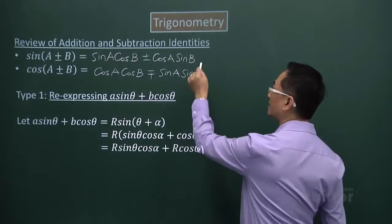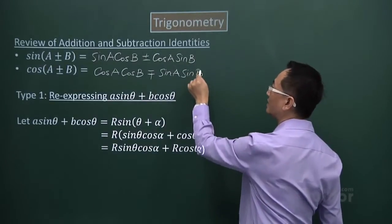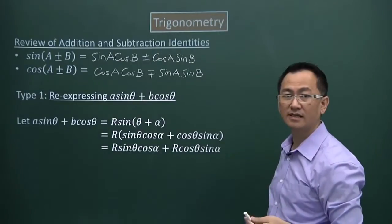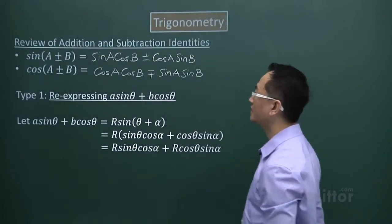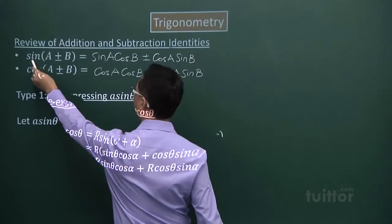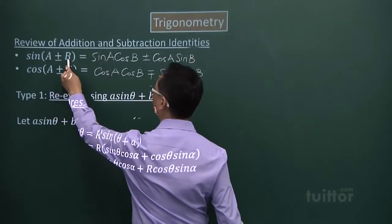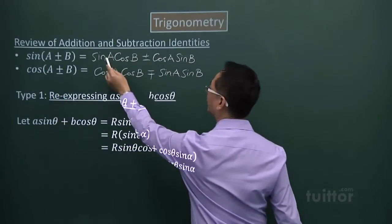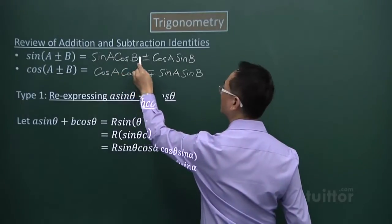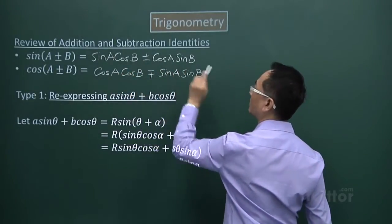Although you see here there are two lines, thinking that there are only two identities, there are actually four. This is how we read this. If I have sin(A + B), then I will have sinA cosB plus cosA sinB.